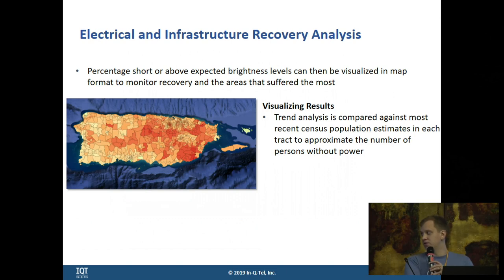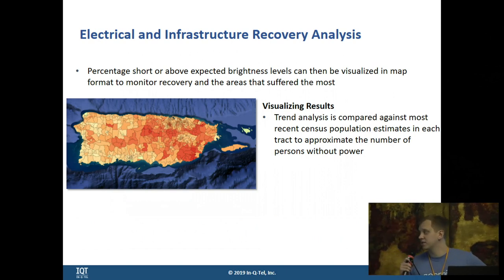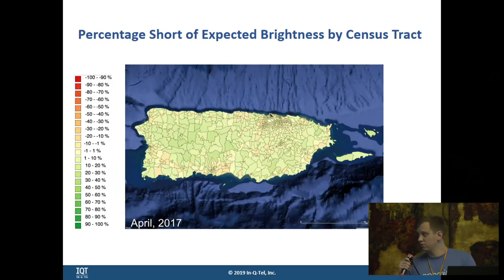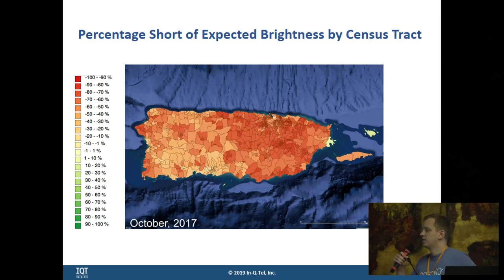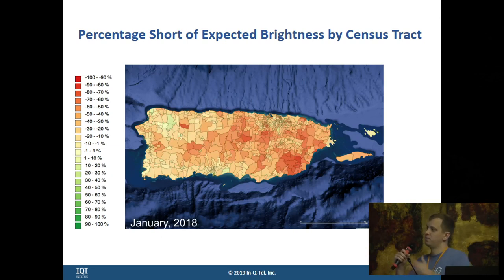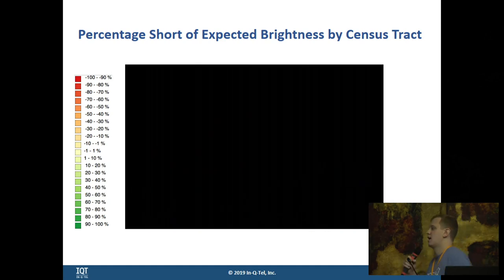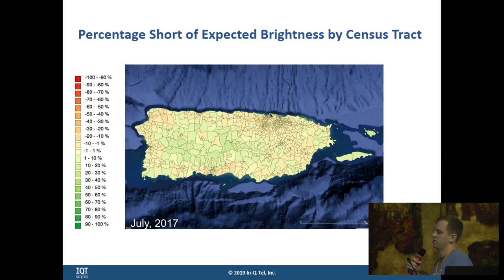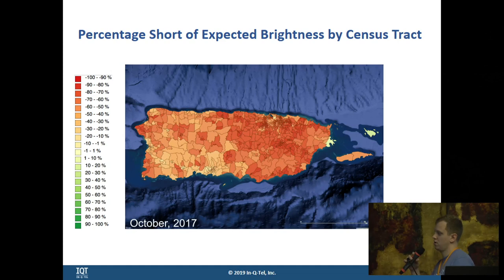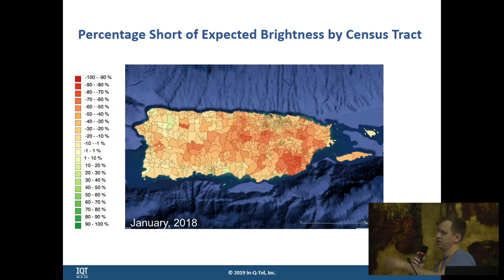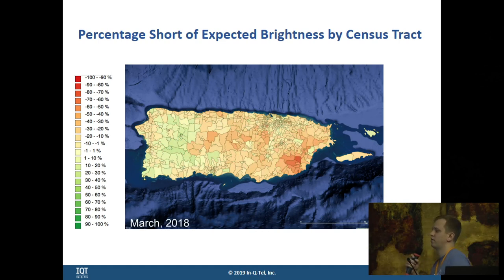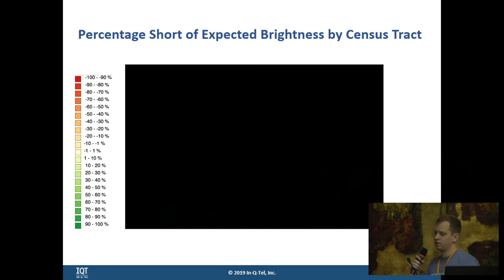We can visualize how these things change over time. This next graphic shows the percentage short of the amount of brightness we expected to see over time, really monitoring areas that were slowest to recover following Maria. So before the storm, we're seeing healthy brightness levels where they're expected to be. As the storm hits at the end of September, we can see a big drop in brightness level — the darker the red, the darker it is versus historical trends. We can see the island gradually recovering, but even by May, most of the island is 20 to 30% darker than we would expect it to be.